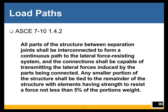We start with the idea of ensuring that we are establishing the load path throughout the parking garage. ASCE 7 has a provision in the first chapter: all parts of the structure between separation joints shall be interconnected to form a continuous path to the lateral force resisting system, and the connections shall be capable of transmitting the lateral forces induced by the parts being connected. Any smaller portion of the structure shall be tied to the remainder with elements having strength to resist a force of not less than 5% of the portion's weight. This requirement has been in the load standard literally for decades.